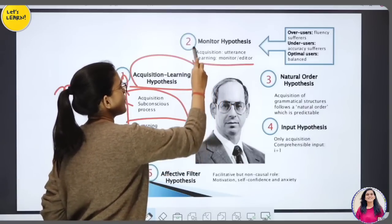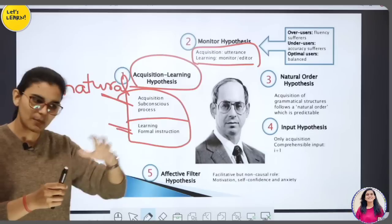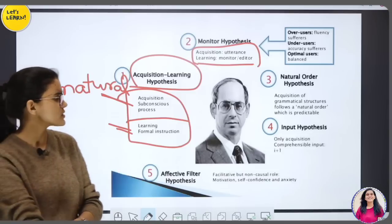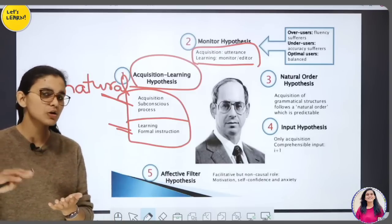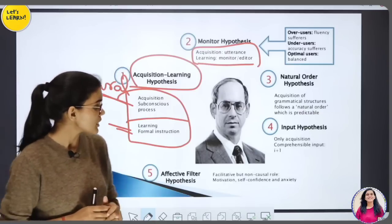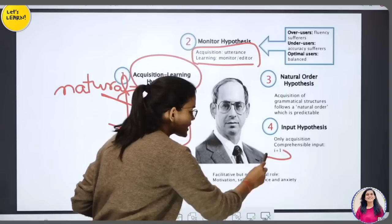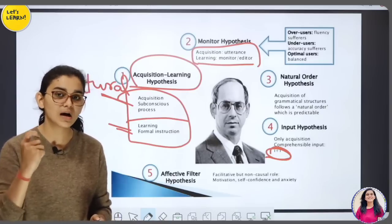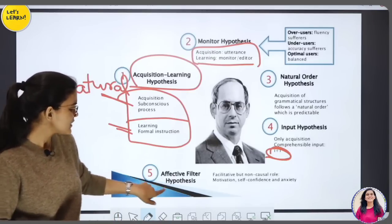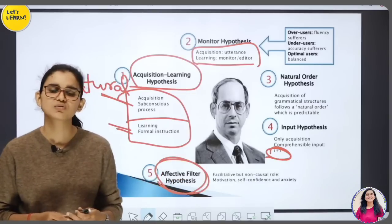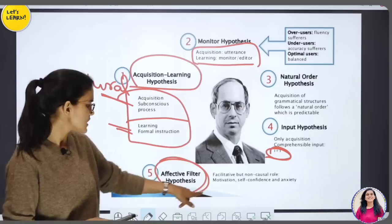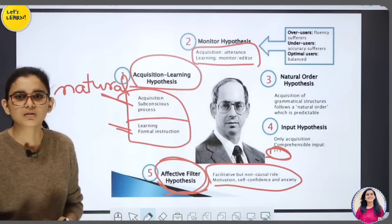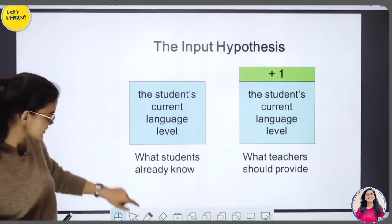आप अपनी मातृभाषा को naturally सीख जाते हैं, कोई किताब लेकर नहीं सिखाता। इसके अलावा Monitor Hypothesis है जिसमें आपकी भाषा को edit किया जाता है। तीसरा Natural Order Hypothesis — grammatical structures को ignore करके natural order में बहने दिया जाता है। फिर Input Hypothesis — जो हम बात कर रहे थे — plus one करके input देते हैं। Affective Filter Hypothesis में emotions, self-confidence और anxiety का role होता है।